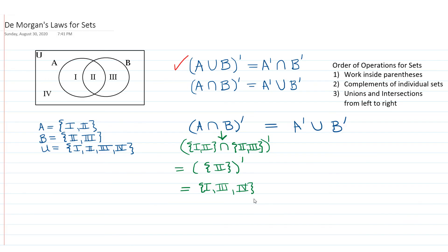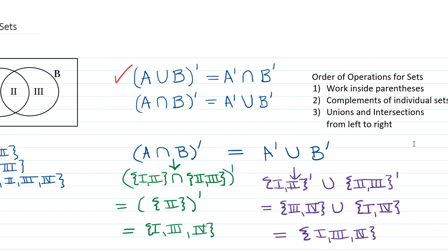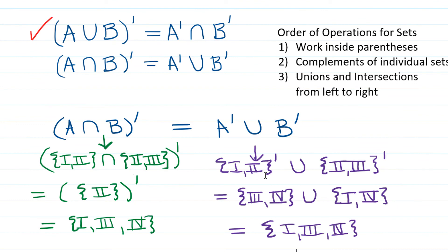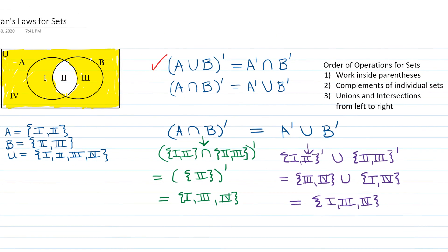Now let's look at the second law. On the left side we have the complement of A intersect B. A contains regions I and II, and B contains regions II and III, so their intersection is region II. The complement of that is everything not in region II: regions I, III, and IV. On the right, A complement contains III and IV, and B complement contains I and IV. Their union is the set containing I, III, and IV — the same result. So A intersect B complement equals A complement union B complement, and both are represented in the Venn diagram by shading all regions except region II. We've proven the second part of DeMorgan's Laws.